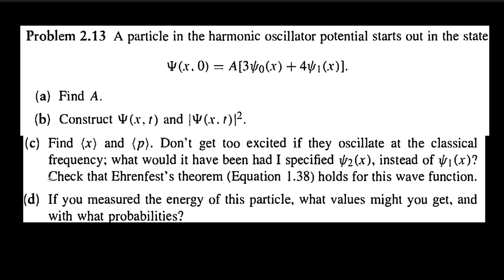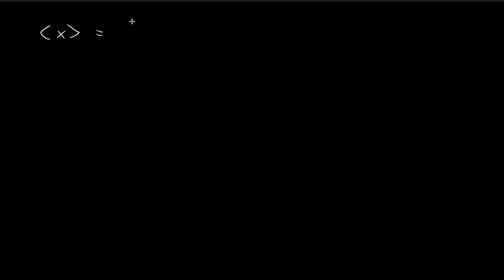Now we're going to solve part c and part d. For part c, we need to first find the expected value of x. The formula for expected value is equal to x itself multiplied by the probability density function. In the case of the wave function, the probability density function is the square of the modulus of the wave function.